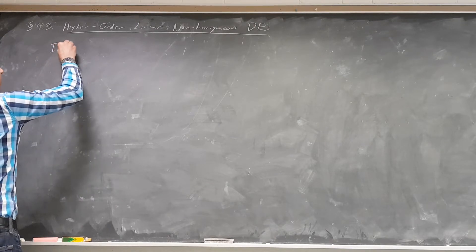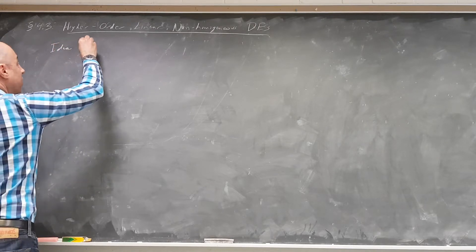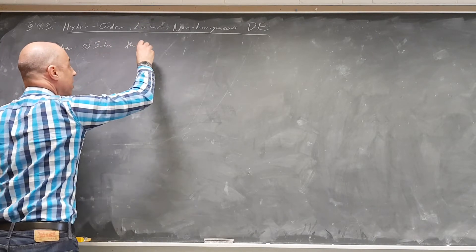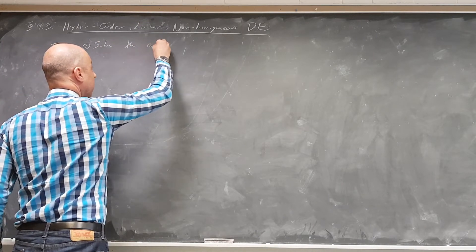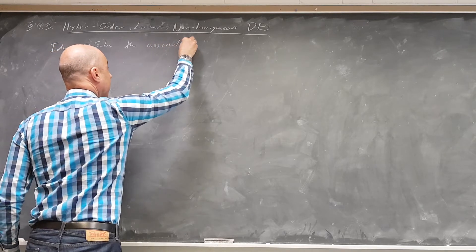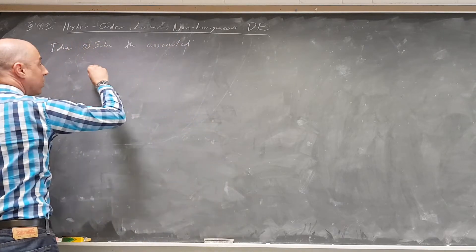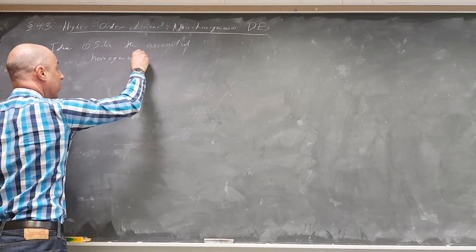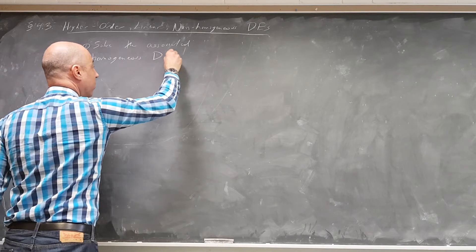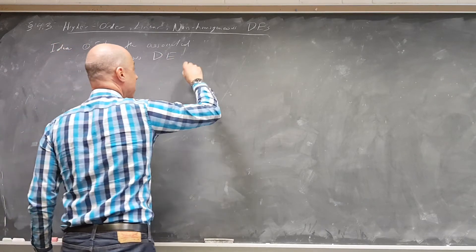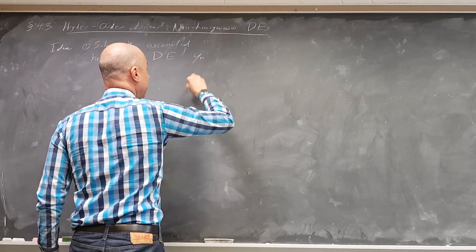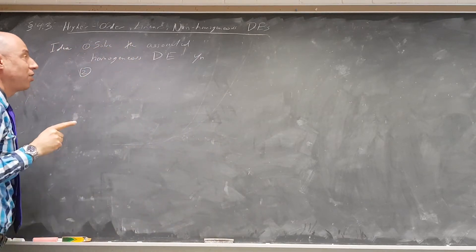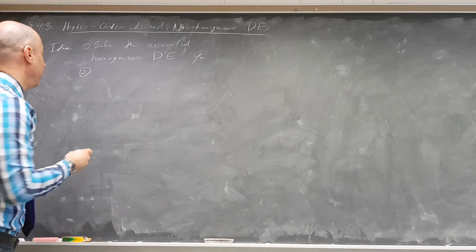first solve the associated homogeneous differential equation, and that gives us something which we'll call y sub h. And then secondly, find a particular solution. We're going to use the method of undetermined coefficients again.